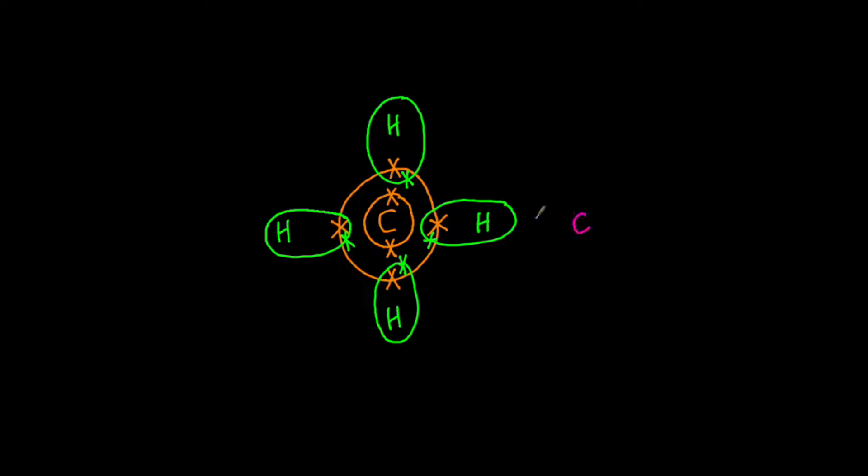Whenever two electrons are shared, we represent this as one single line or a single covalent bond. So here you have carbon bonding with four hydrogens and forming four covalent bonds, and in each covalent bond two electrons are shared.